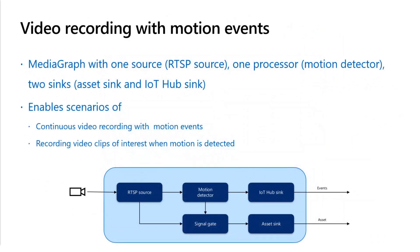Let me step through one more example graph. This graph enables you to capture video only when activity is detected by the motion detector processor. So if you have cameras pointed at a location where nothing is happening most of the time, but occasionally something interesting happens, this kind of graph enables you to focus on those relevant portions of the video.